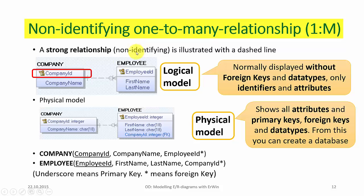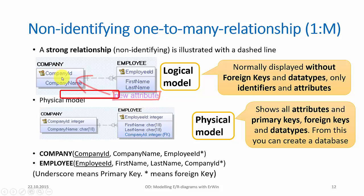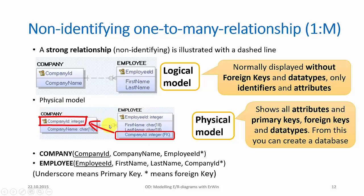To model a non-identifying one-to-many relationship, we use a dashed line. Here we see that the company is the one side and employee is on the many side. We can read this model like this: one employee is employed in exactly one company, while one company can have zero, one, or many employees. When we convert this ER model to a physical model, the rule is that the identifier on the one side will become a new attribute on the many side, and this attribute will be a foreign key that references the attribute on the one side. This is the most common kind of relationship — the one-to-many non-identifying relationship.